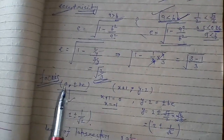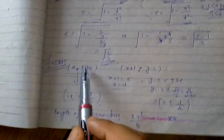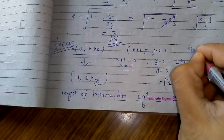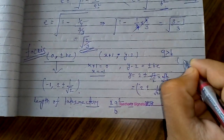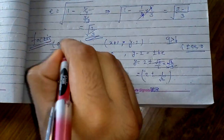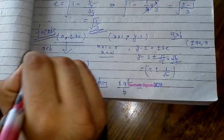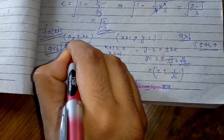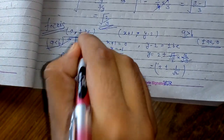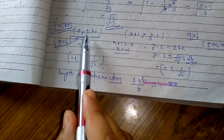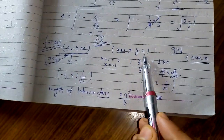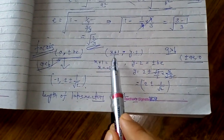To find the coordinates of the focus: if a is greater than b, the coordinate of the focus is (±ae, 0). Since we have a less than b, we apply the formula (0, ±be).